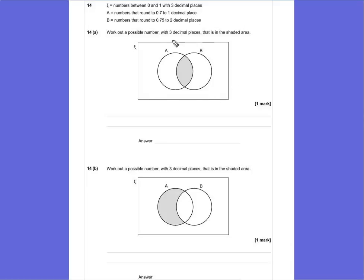Anything else would lie outside this circle but in that gray shaded area in the middle we're looking for a number that would meet both of those criteria. Question 14a says work out a possible number with 3 decimal places that is inside that shaded area. So it has to round to 0.7 to 1 decimal place or 0.75 to 2 decimal places.